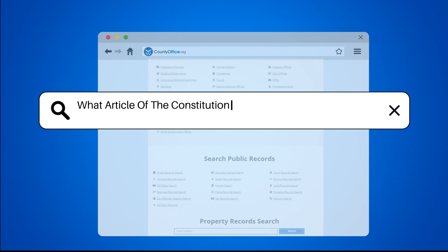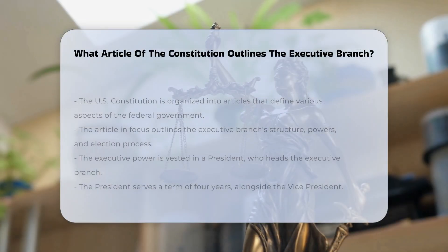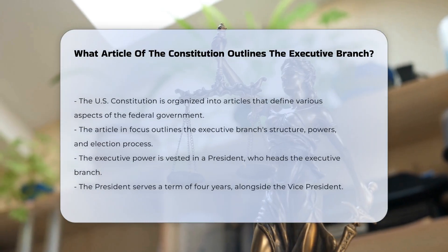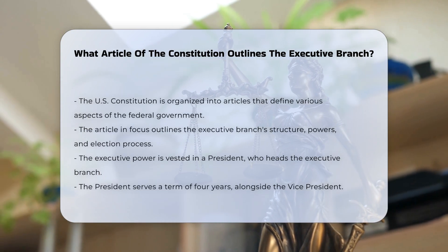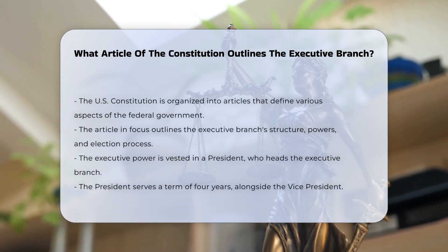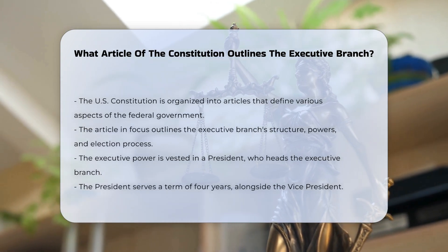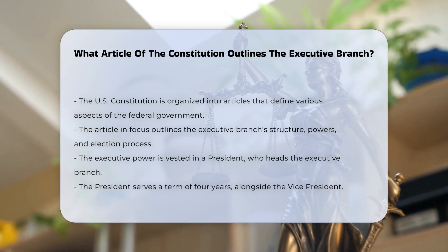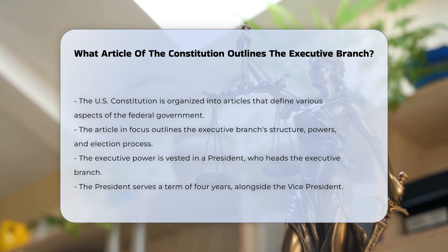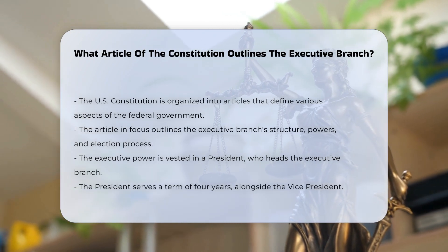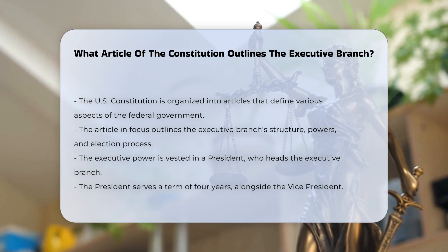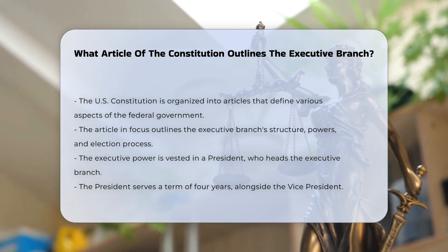What article of the Constitution outlines the executive branch? The U.S. Constitution is divided into several articles, each addressing a different aspect of the federal government. The article in question deals specifically with the executive branch, outlining its structure, powers, and the process of electing its leader.